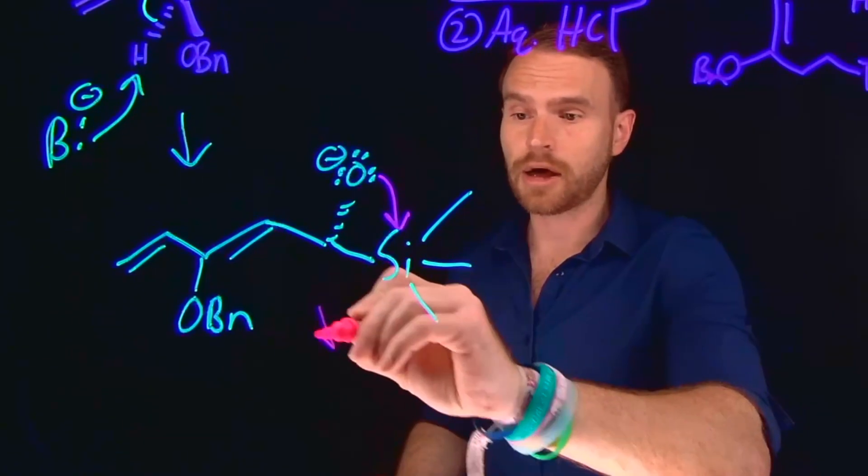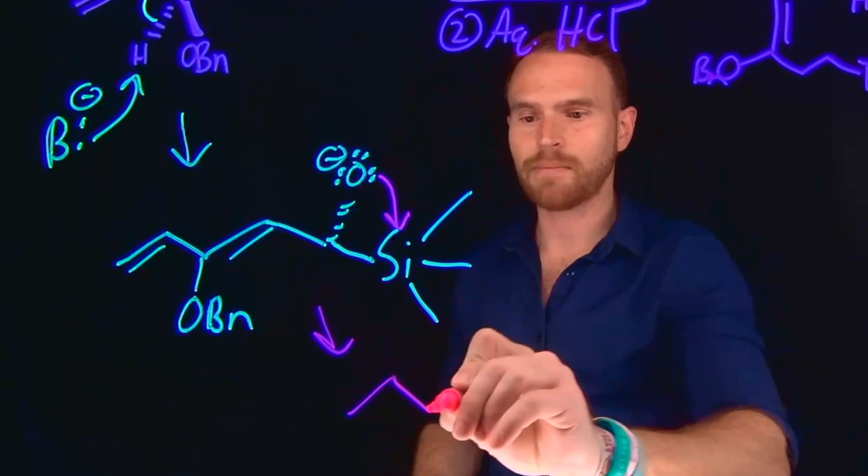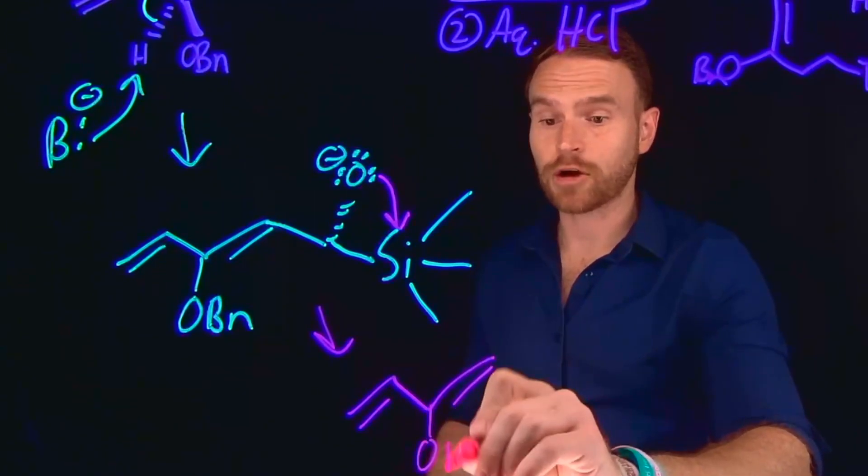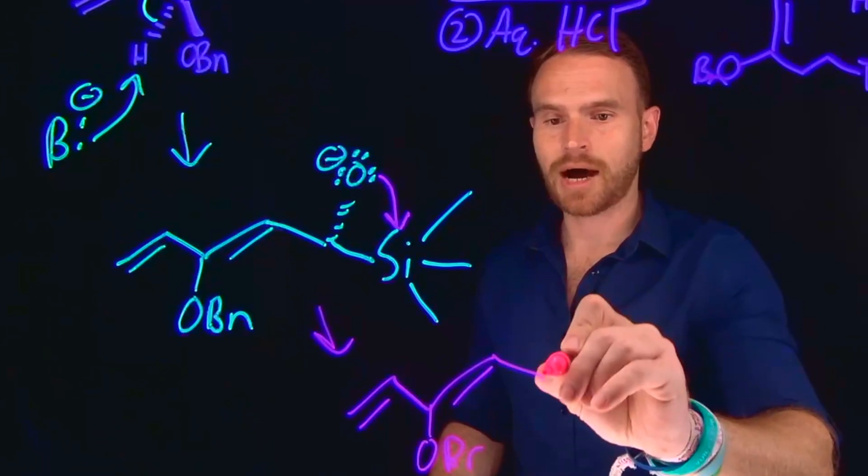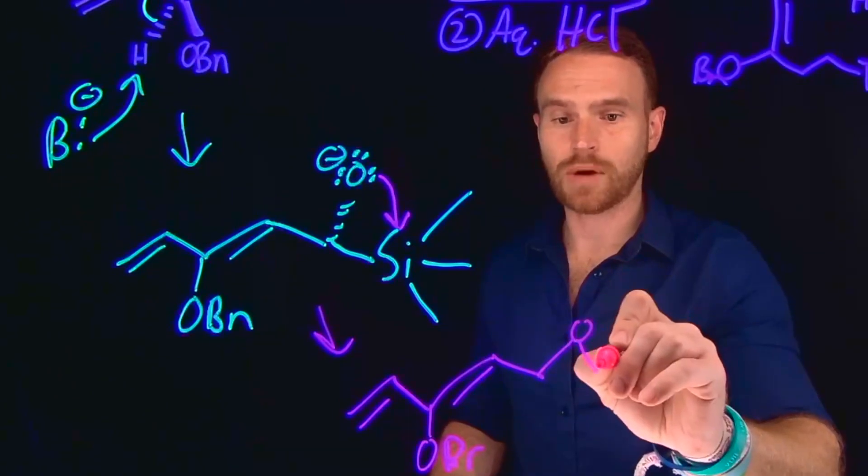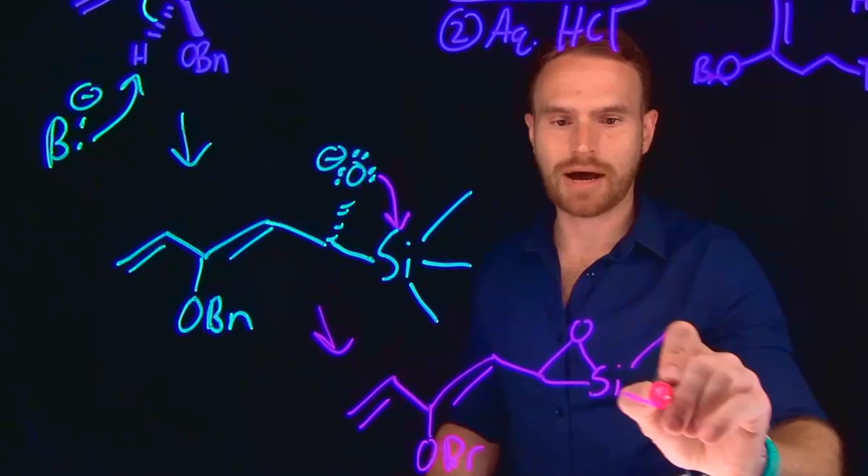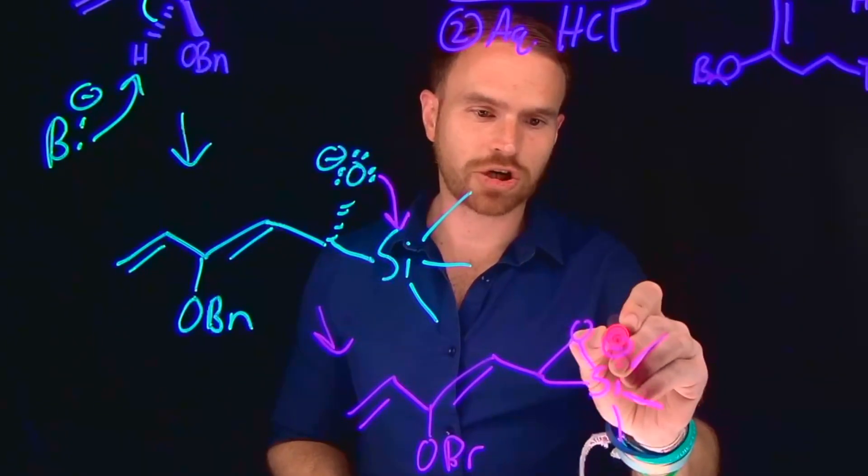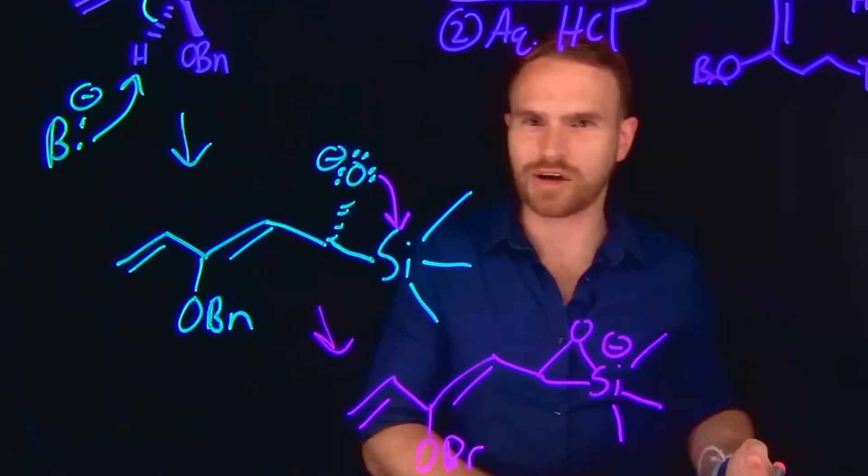which basically looks, again, like an epoxide, except for this time, rather than having the epoxide formed through several different carbon atoms, this oxygen is going to be attached to a silicon at this position. And then we still have our three methyl groups coming off of it. And this makes this silicon negatively charged because now it has extra electrons attached to it. So it still allows us to preserve our charge.